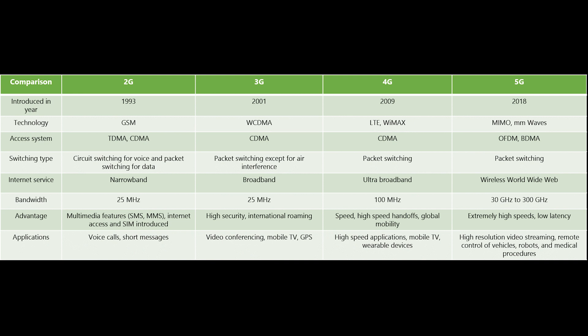GSM, or Global System of Mobile Communication, is the technology that initially used Time Division Multiple Access (TDMA) to provide multi-user access by chopping up the channel into sequential time slices. TDMA is a digital modulation technique used in digital cellular telephone and mobile radio communication.